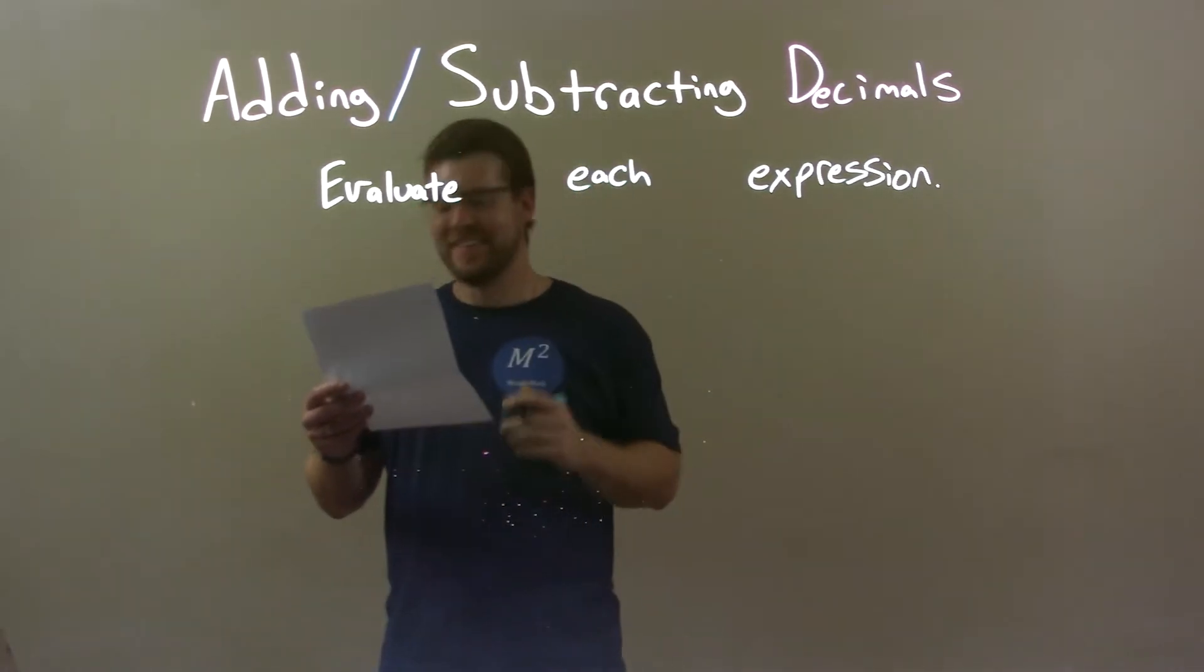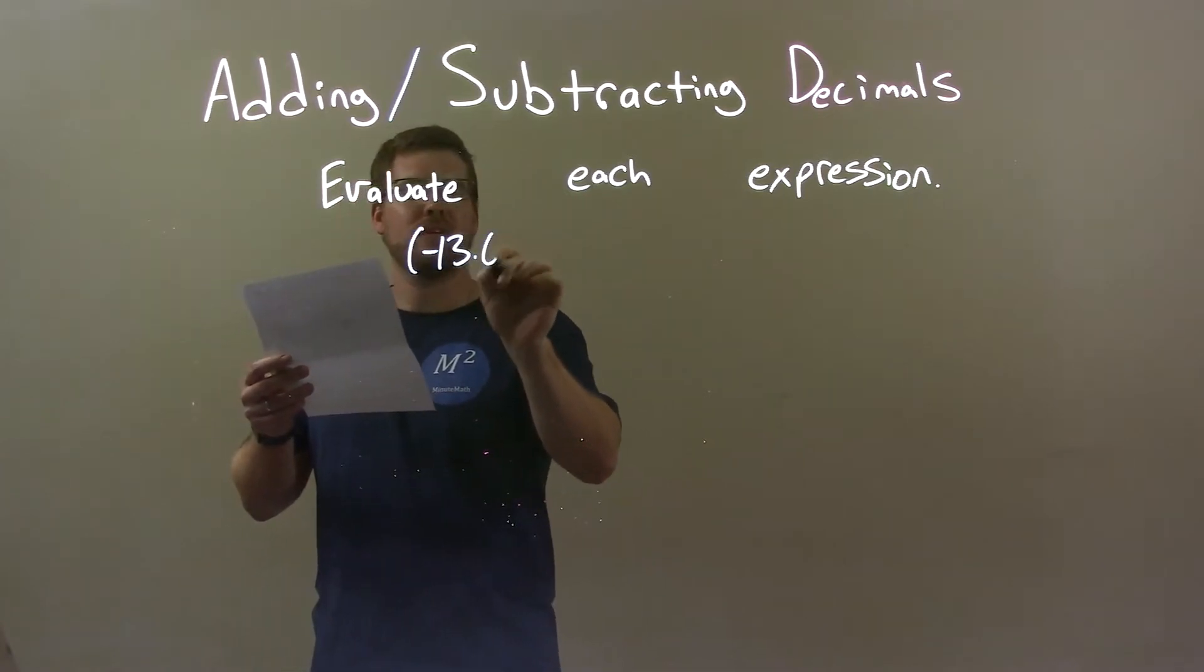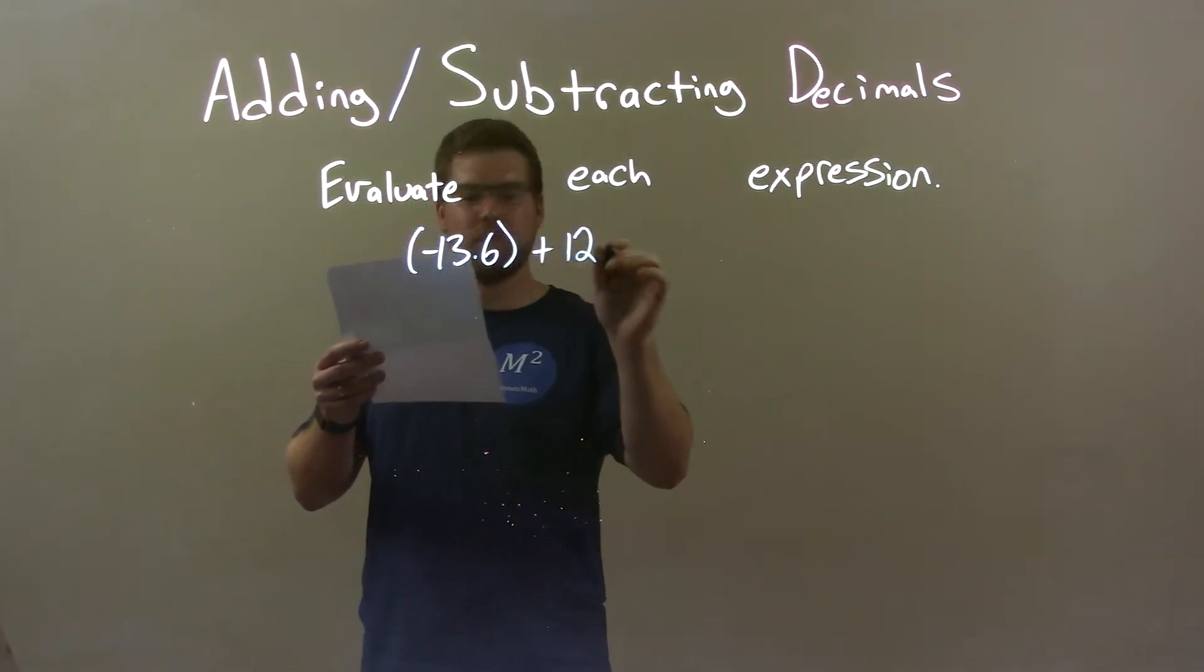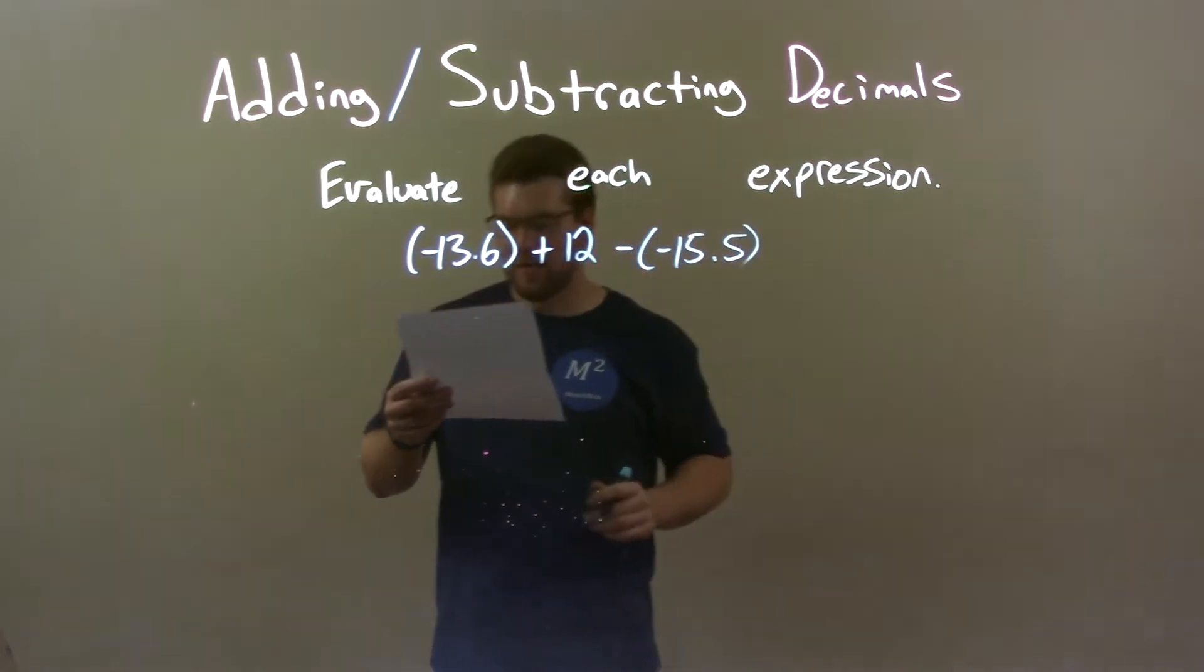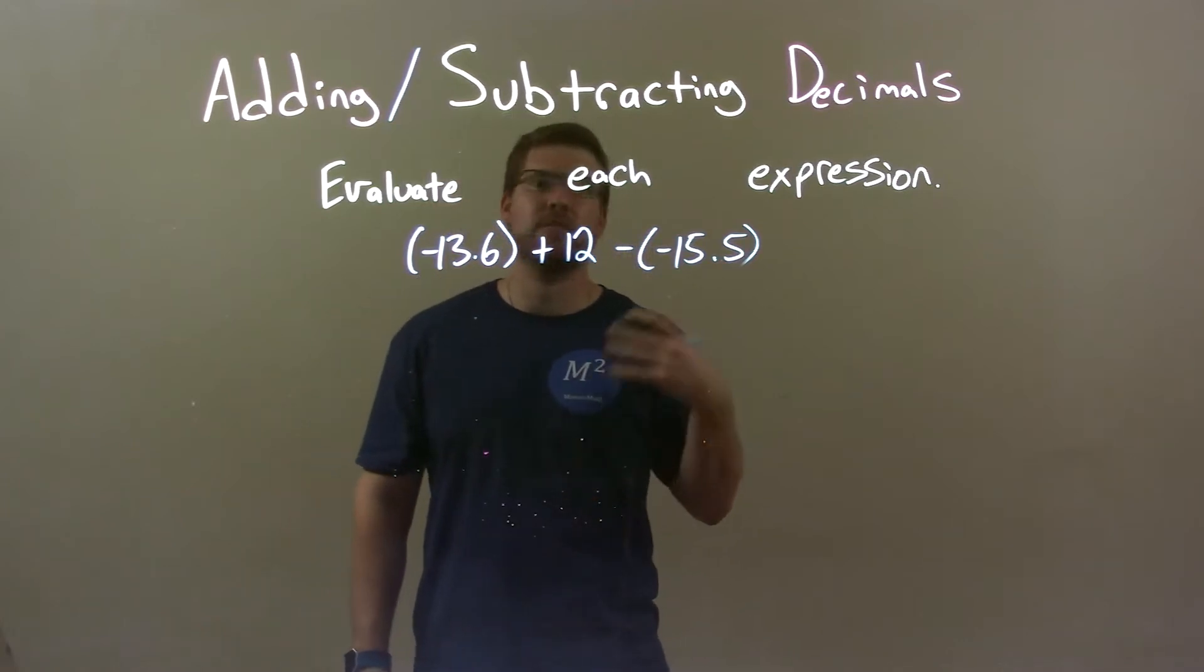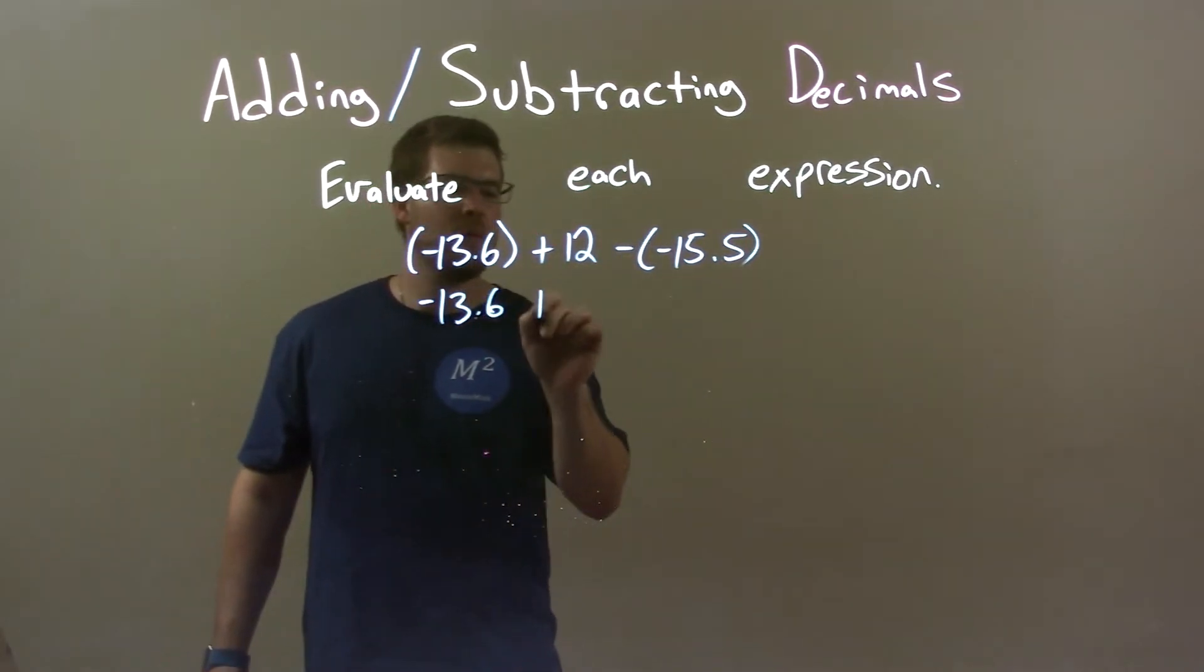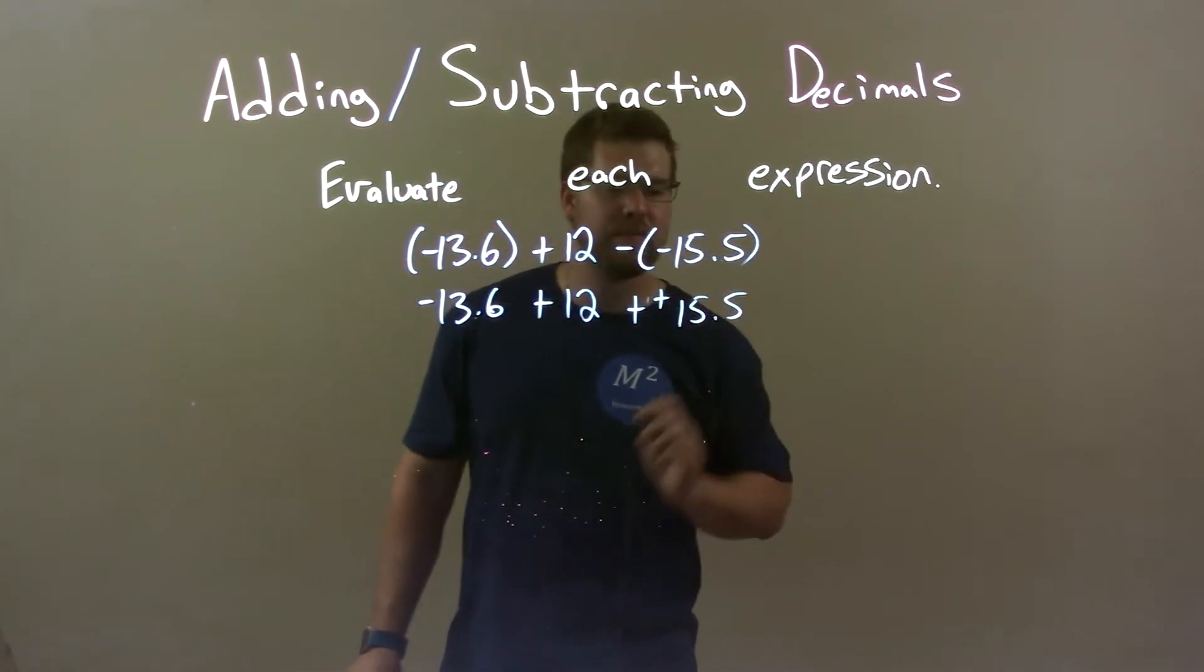If I was given this problem, negative 13.6 plus 12 minus a negative 15.5, first thing I do is minus a negative, same thing as adding a positive. So negative 13.6 plus 12 plus a positive 15.5.